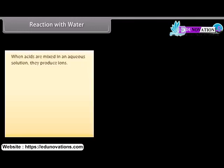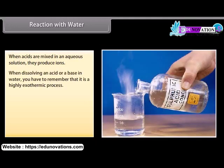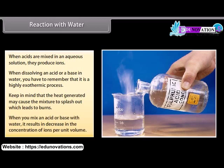Reaction with water: When acids are mixed in an aqueous solution, they produce ions. When dissolving an acid or a base in water, remember that it is a highly exothermic process. While adding water to a concentrated acid, the heat generated may cause the mixture to splash out, leading to burns, and may cause the glass container to break due to excessive local heating. When you mix an acid or base with water, it results in a decrease in the concentration of ions per unit volume. This process is called dilution, and you get a diluted acid or base.